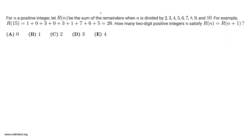So r(n) is the sum of remainders when n is divided by 2, 3, 4, 5, 6, 7, 8, 9, and 10. I'm going to write out 2, 3, 4, 5, 6, 7, 8, 9, and 10 here, and you'll see why in a moment.